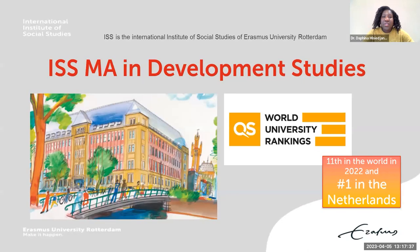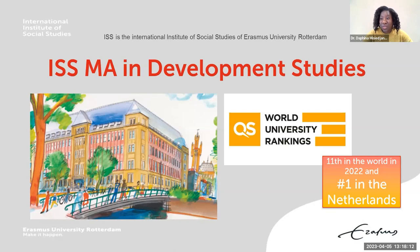The SJP, or Social Justice Perspectives major, falls within the ISS Master in Development Studies. This program is very highly ranked — 11th in the world according to QS World University Rankings and number one in the Netherlands. Our perspective on development is very much a critical one, which is also reflected in how we are ranked.